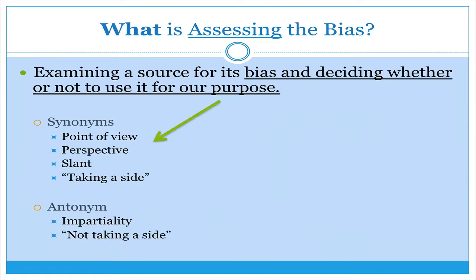So now we know what bias is. What exactly is assessing the bias? This is when we examine a source for its bias or perspective and decide whether or not to use it for our purposes. We have to be savvy readers and viewers of text. We have to figure out what is the bias of this text, why might we want to learn from it or use it in our research, and what is the bias of that text?